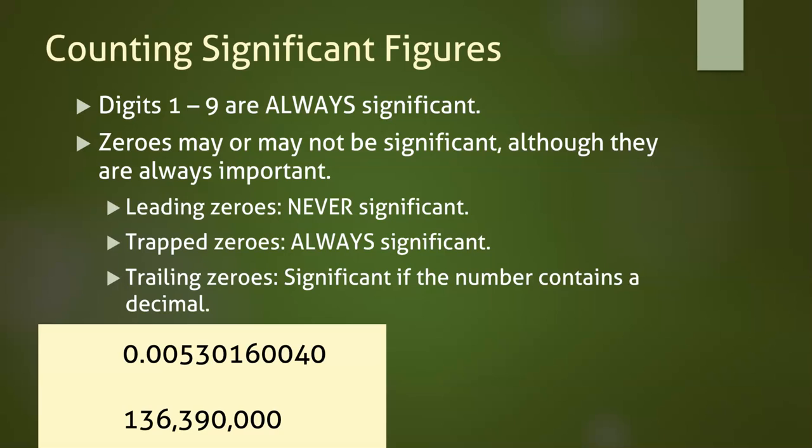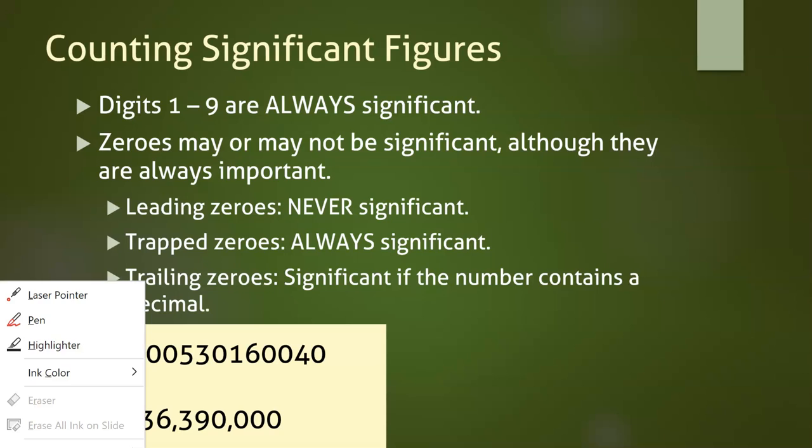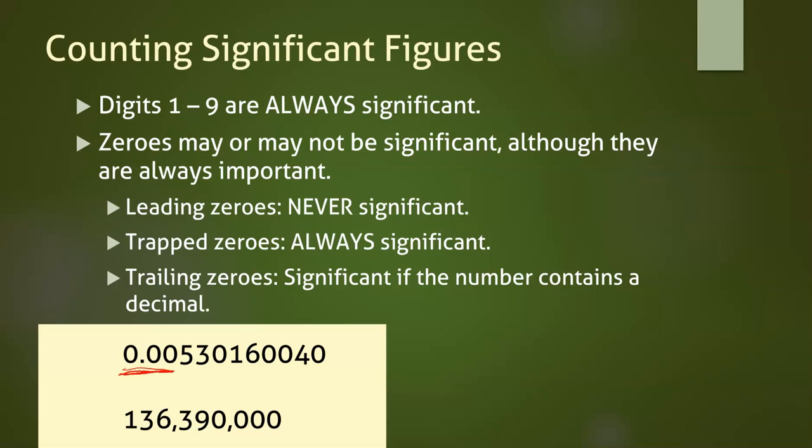Here are two example numbers. Let's count their sig figs together. In the first number, the first three digits are leading zeros, so they don't count. Five and three both count, and the next zero is trapped between two numbers, so it is significant. The one and the six always count. The next two zeros are still trapped, and so they are significant, and the four is significant. Our last digit is a trailing zero, so we look for a decimal somewhere in the number. We find it towards the beginning, and so our last zero is significant. This gives us a total of nine sig figs.